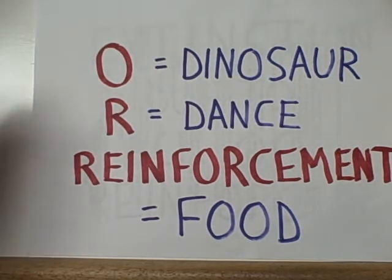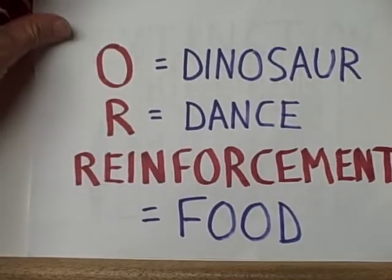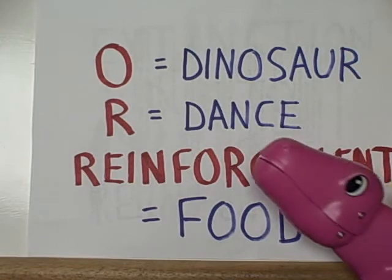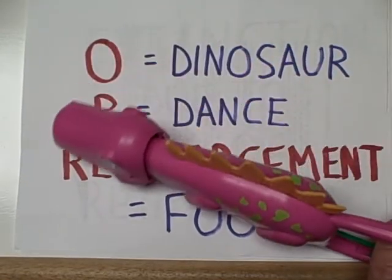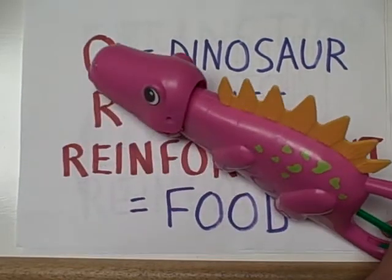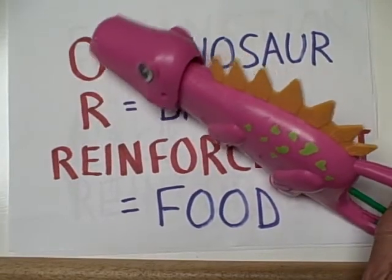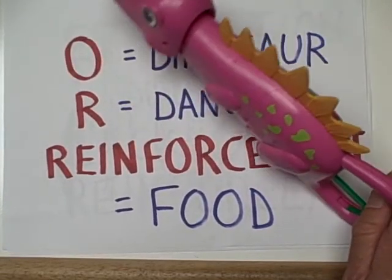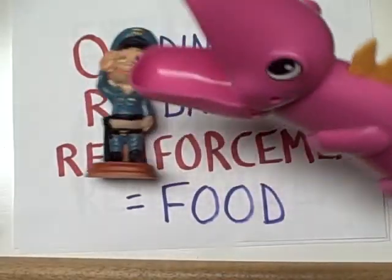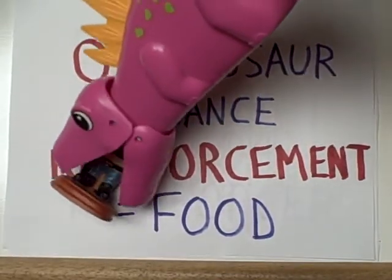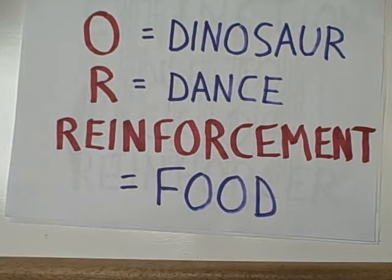Here is Gigi, and she's going to start dancing for us. She's just walking around, not doing too much — she's an active dinosaur. When she starts moving on her hind legs, we're going to give her some reinforcement. There she goes up a little bit, a little bit more — and look, the reinforcer is here! There's a happy dinosaur with her favorite meal.